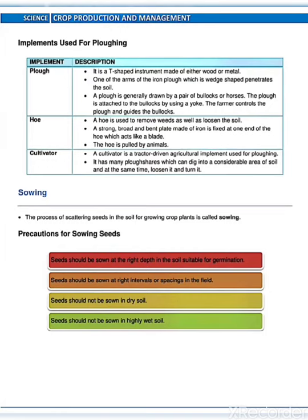Implements used for ploughing: plough and hoe — these are the traditional implements used in ancient times. Nowadays, a cultivator is widely used. A cultivator is a tractor-driven agricultural implement used for ploughing. It has many plough shares which can dig into a considerable area of soil and at the same time loosen it and turn it.